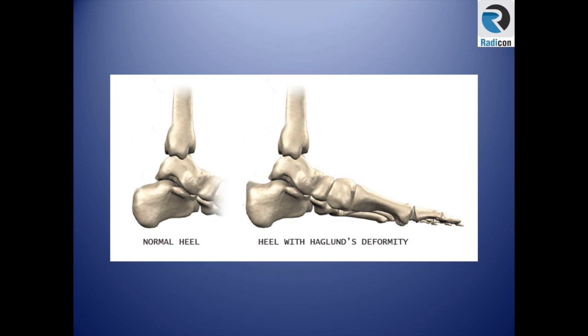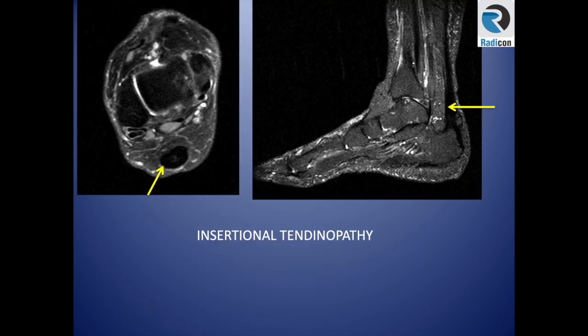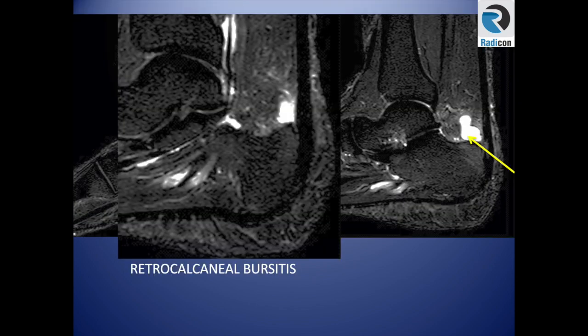In this example, you can see thickening of the distal Achilles tendon at the insertion and soft tissue swelling anterior to it, representing retrocalcaneal bursitis. On MRI, the thickening is at the insertion while six centimeters above looks normal — this is insertional tendinopathy. You can also see the prominence of the posterior superior calcaneum: Haglund deformity. This combination of insertional tendinopathy, retrocalcaneal bursitis, and the bony deformity is called the Haglund triad.